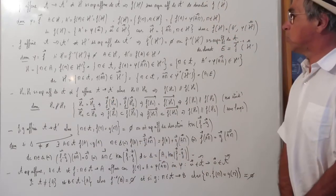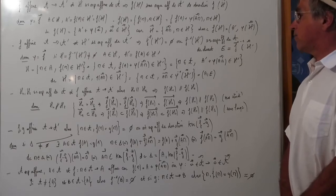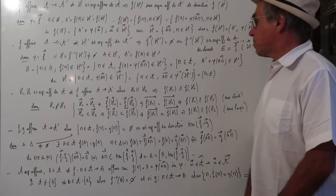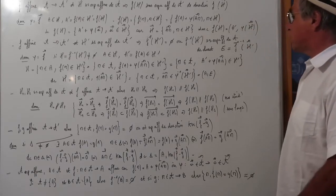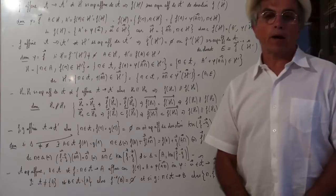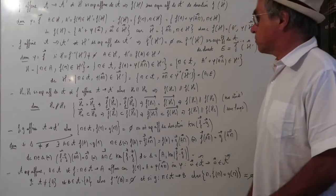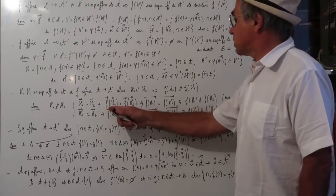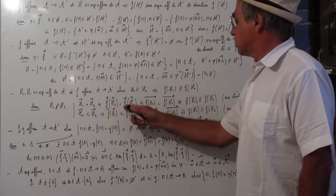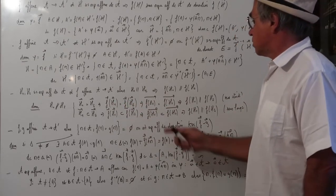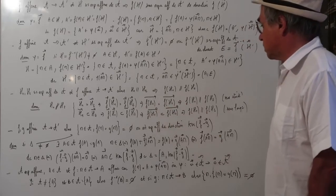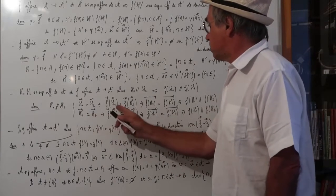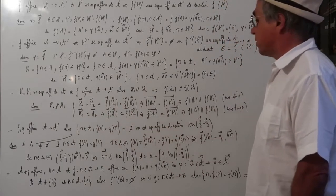Propriété : si H1 et H2 sont deux sous-espaces affines de A et F est une application affine de A vers A', alors si H1 est parallèle à H2, F(H1) est parallèle à F(H2). Si H1 est parallèle à H2 au sens strict, j'applique la partie linéaire de F et j'obtiens que la direction de F(H1) est égale à la direction de F(H2), donc c'est parallèle au sens strict. Au sens large, la même chose, sauf qu'à la place des égalités, ce sont des inclusions.